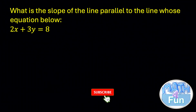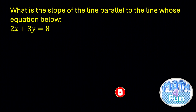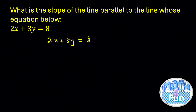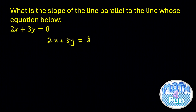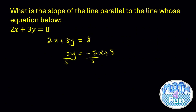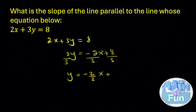Let's look at the next question. They said: what is the slope of the line parallel to the line whose equation is 2x plus 3y equals 8? We need the slope of the line that is parallel to this. We know that when lines are parallel, they have the same slope. So, what is the slope of this line? We take 2x to the other side: 3y equals minus 2x plus 8, then divide the whole equation by 3. You're left with y equals minus 2 over 3 times x plus 8 over 3.